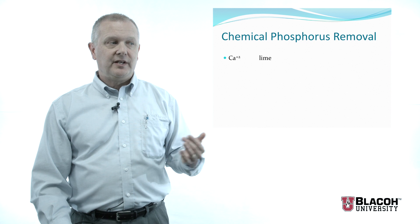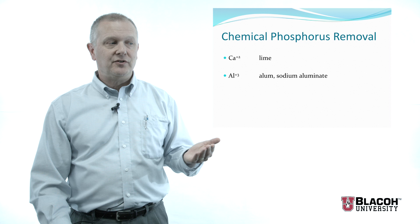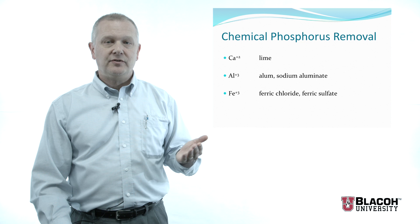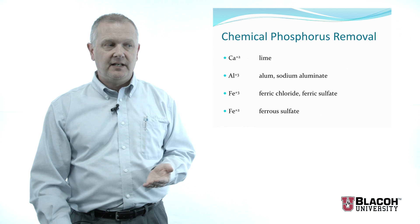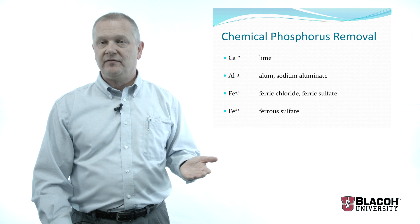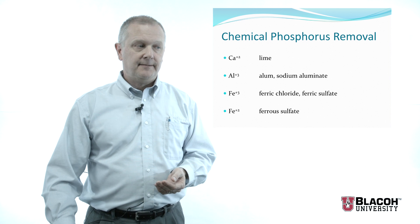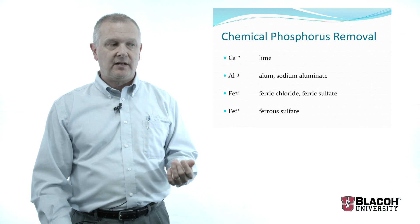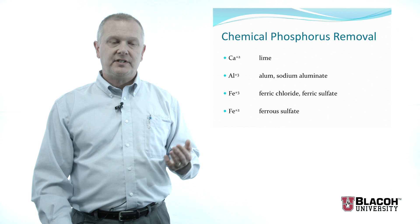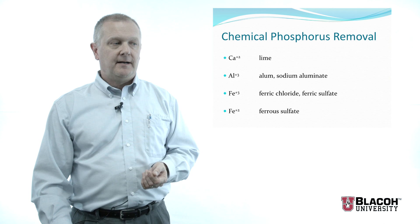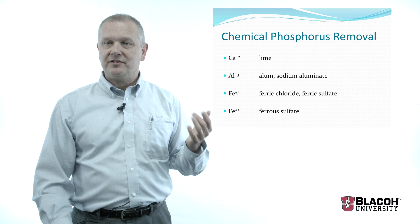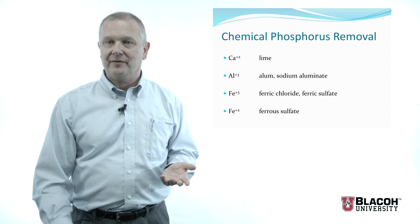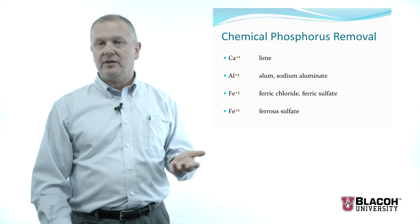These are some of the chemicals that can be used. We can use calcium in the form of lime, aluminum in the form of alum, sodium aluminate, or aluminum chlorhydrate. We can use iron in the form of ferric chloride, ferric sulfate, or ferrous sulfate. Most plants use alum as the least expensive. Some use ferric chloride, which they often use in other parts of the treatment plant. They all have advantages and disadvantages, and each plant has to evaluate what's most cost effective for phosphorus removal.